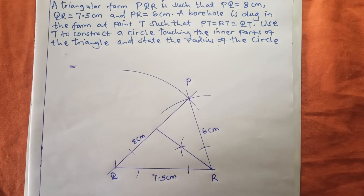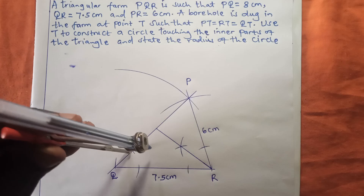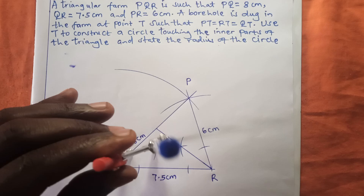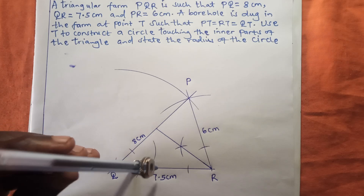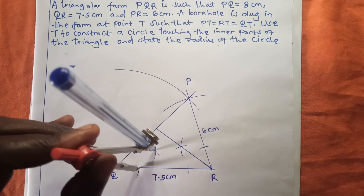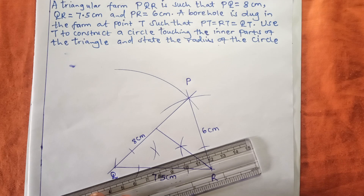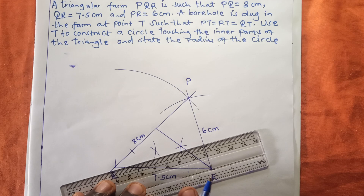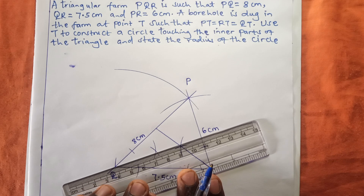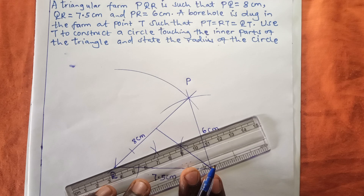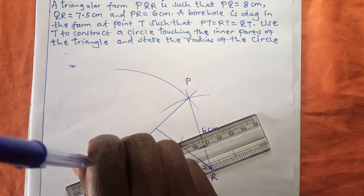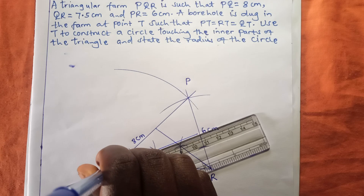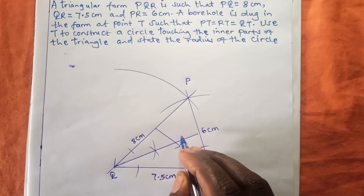The next step is to bisect angle Q. I make another arc inside this triangle, then stand on the arc I made earlier and cross it so the arcs meet at a point. I use the ruler to join that meeting point to where we have point Q, making a very straight line that passes through the meeting point.